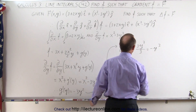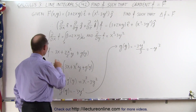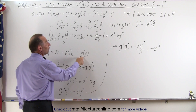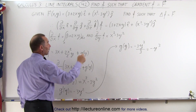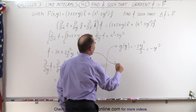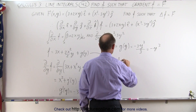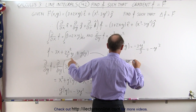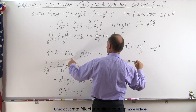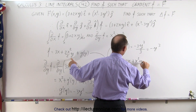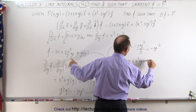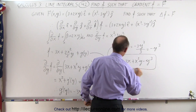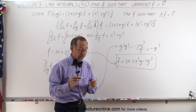We can take the integral of both sides with respect to y to find g of y. The integral of negative 3y squared is negative 3y cubed divided by 3, which equals negative y cubed. So now we realize the function we're looking for is f equal to 3x plus x squared y minus y cubed.